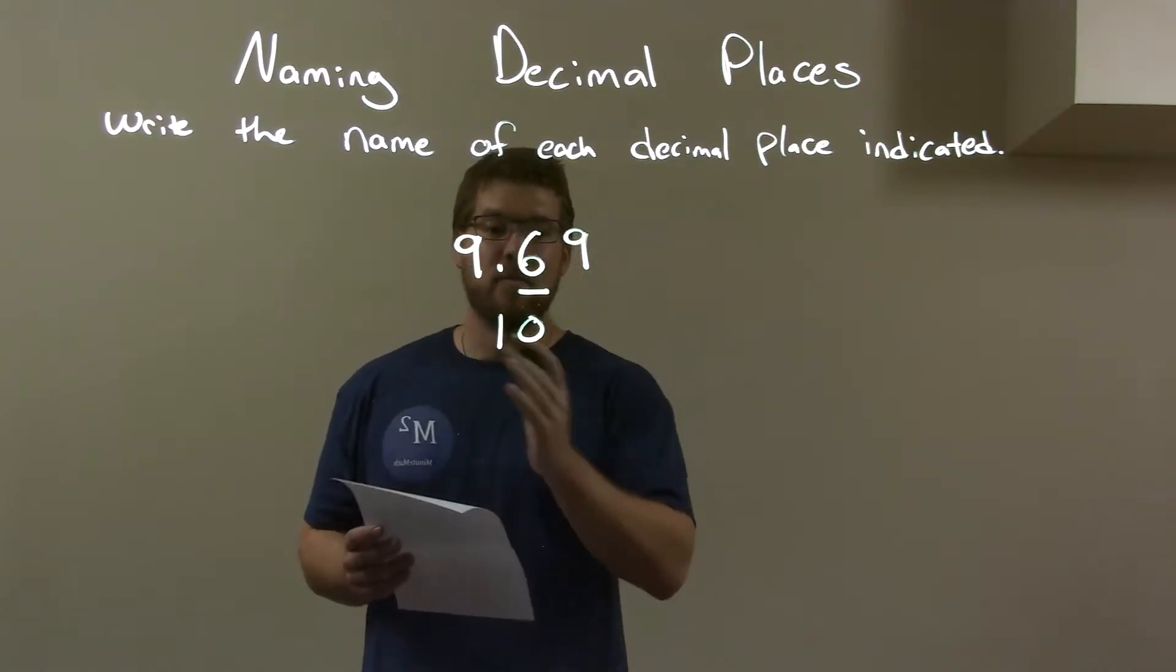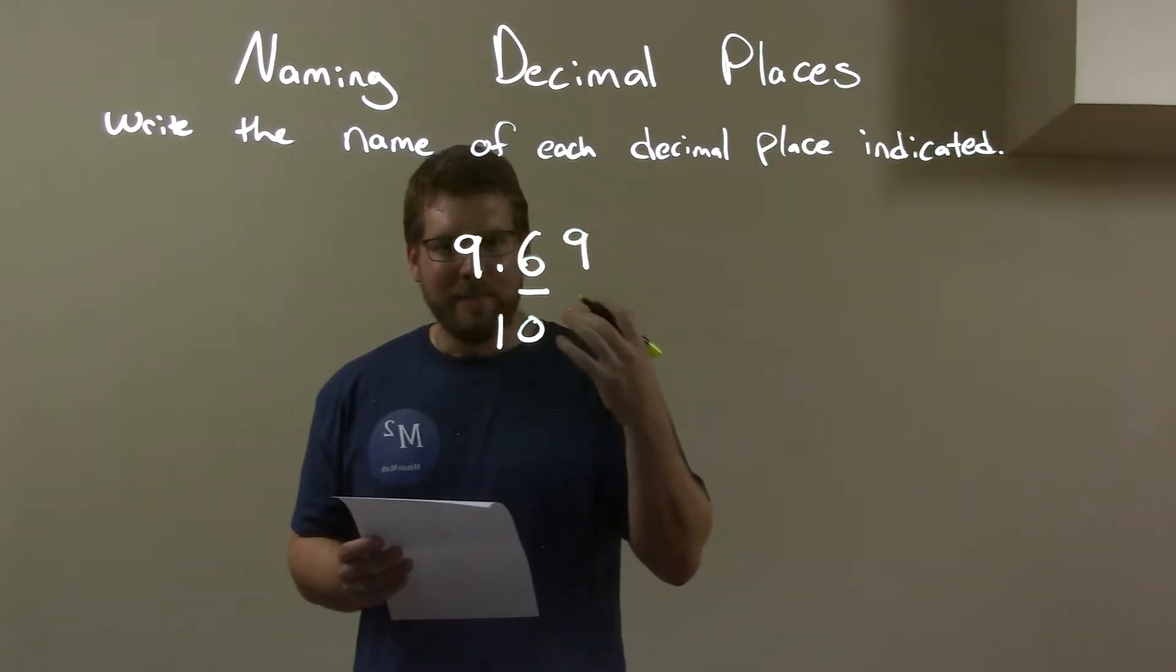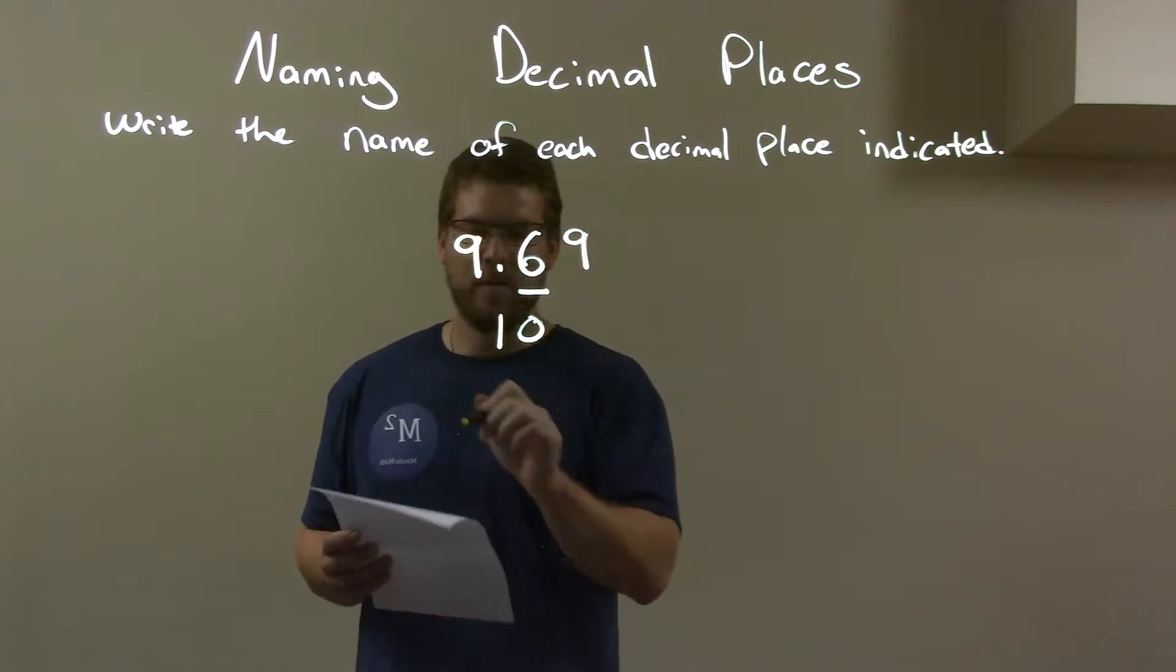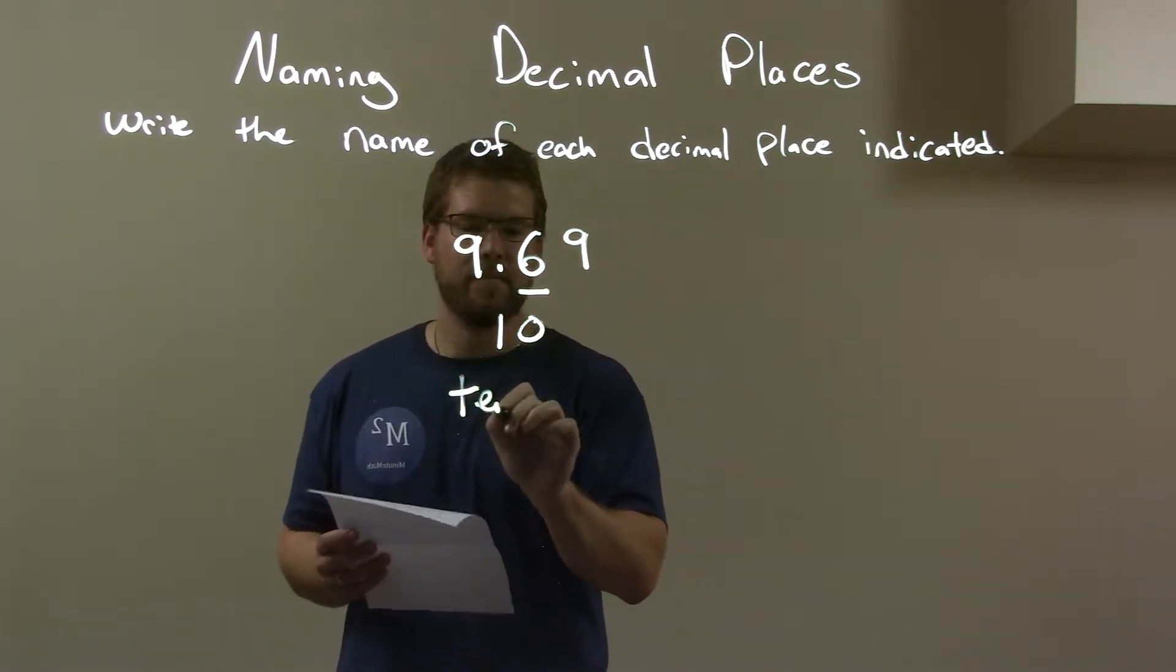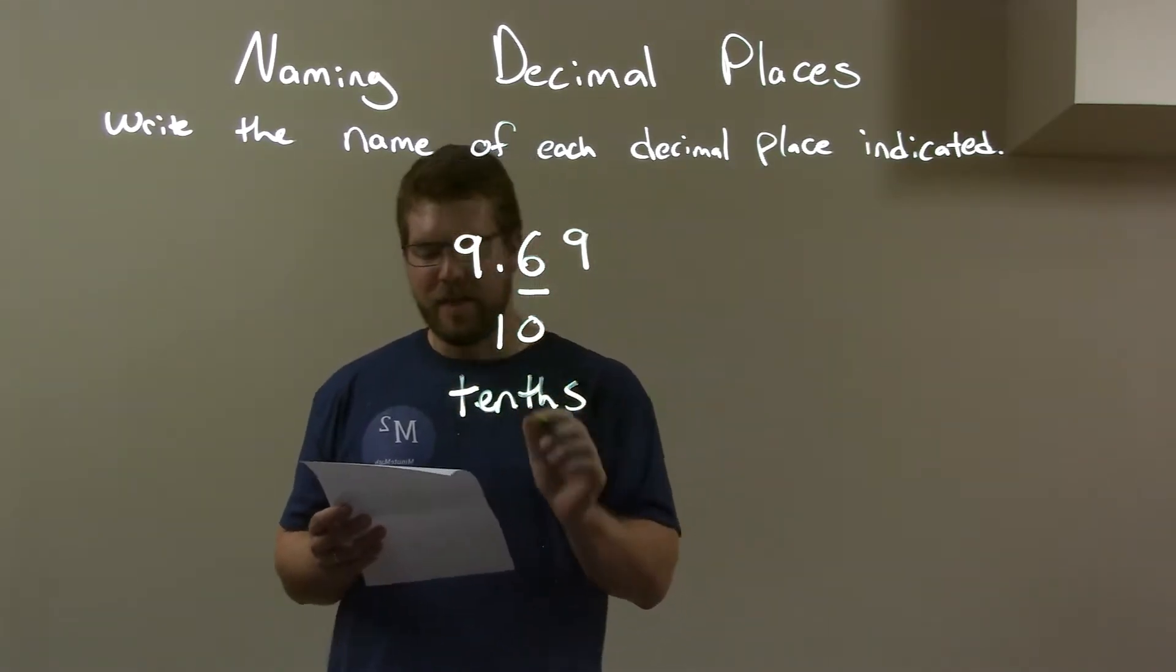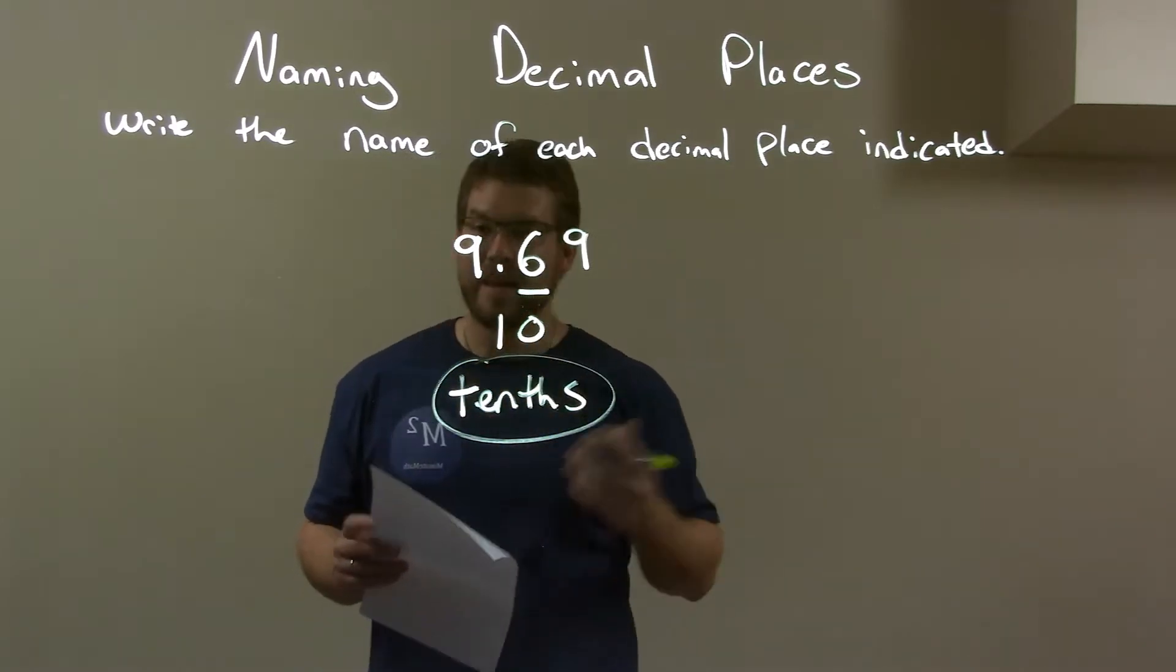So that's just the first one. I have a 10, right? So that means, since it's to the right of the decimal, this is the tenths place. Tenths place. Okay, and there's our final answer.